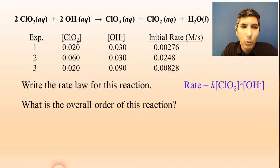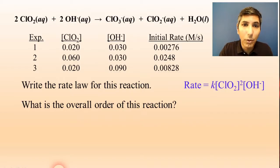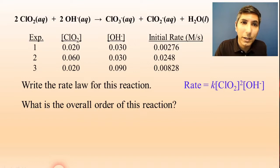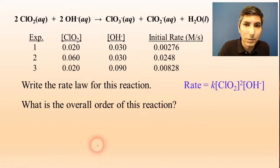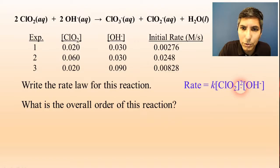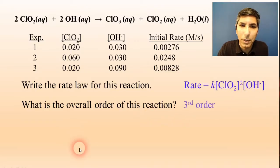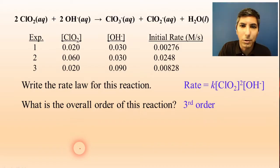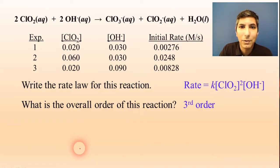What is the overall order of this reaction? The overall order is just the sum of the individual orders — take the exponents and add them together. Two plus one gives us three, so this reaction is overall third order. If you know the individual orders, just add them together to get the overall order.